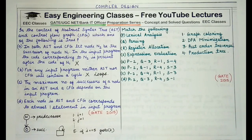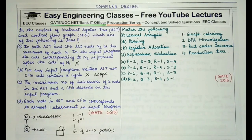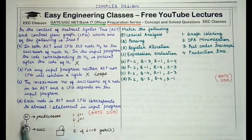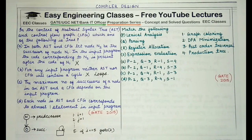The third option states that the maximum number of successors of a node in an AST and CFG depends on the input program. This is correct. The number of successors a node can have depends entirely on the program. For example, an if-else ladder will give a node more successors compared to a simple if statement.